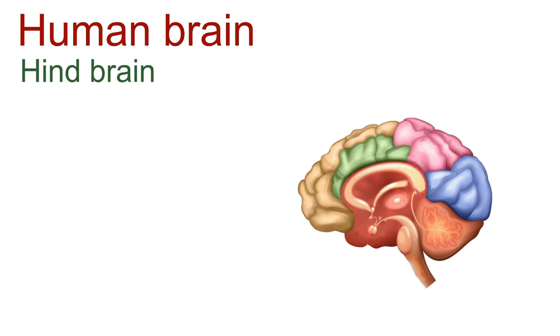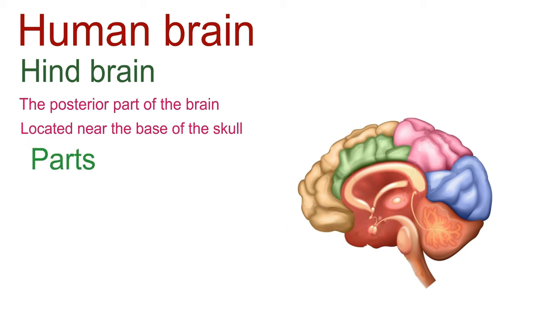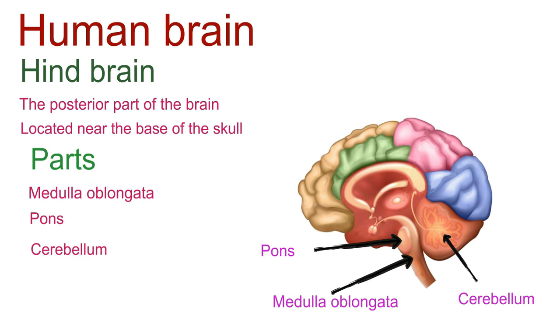The hindbrain is the posterior part of the brain, located near the base of the skull. And it comprises three main structures: the medulla oblongata, the pons, and the cerebellum.